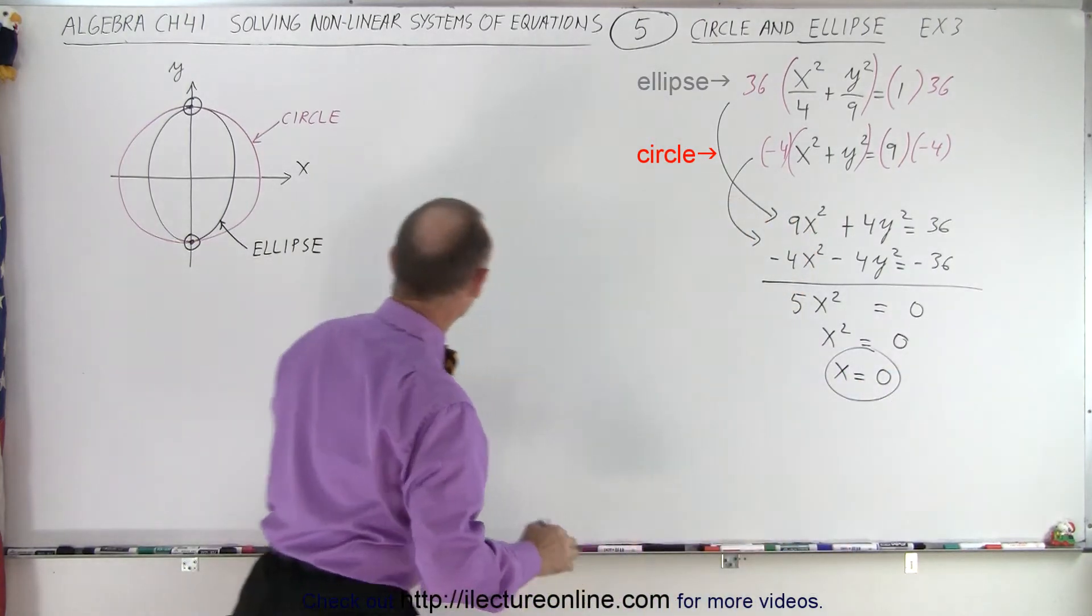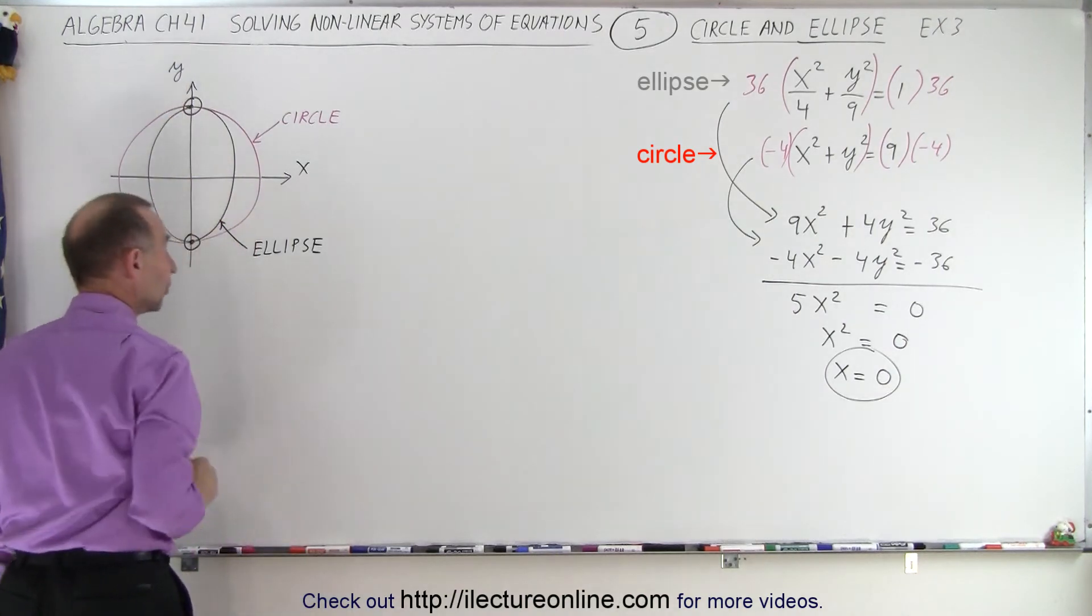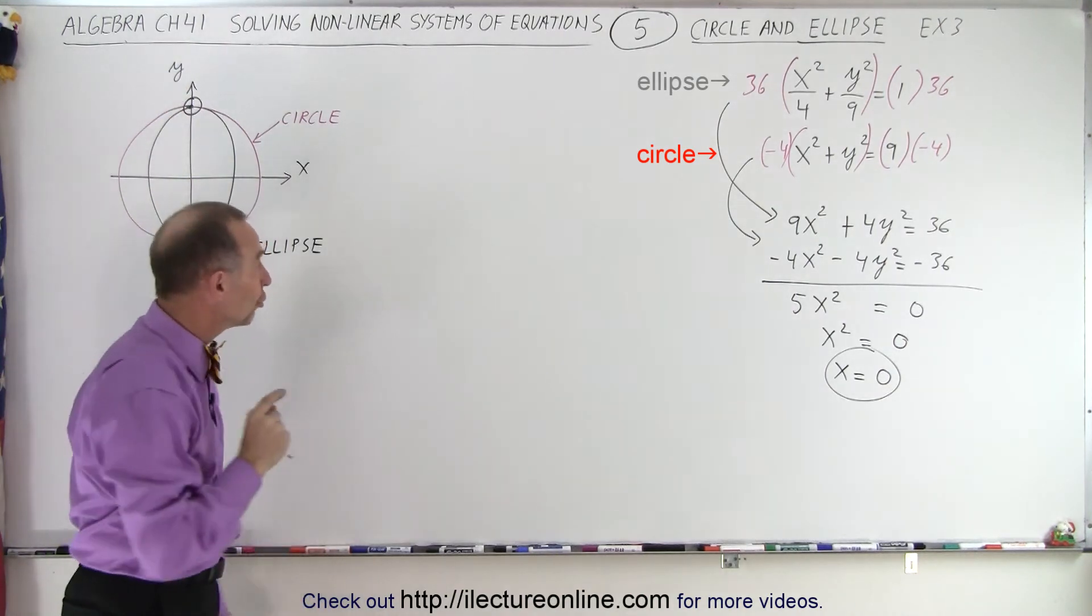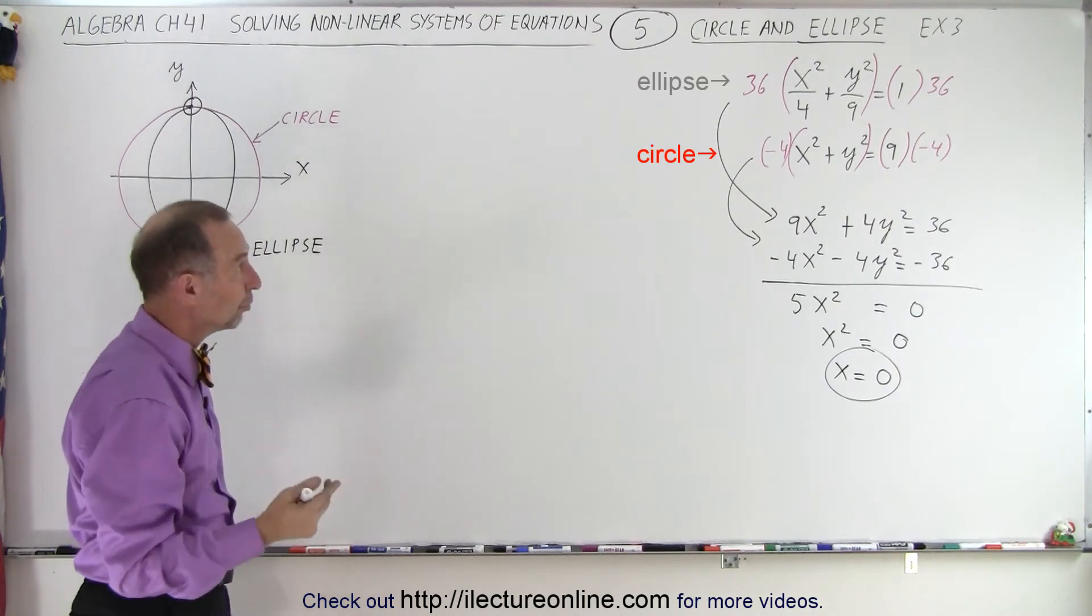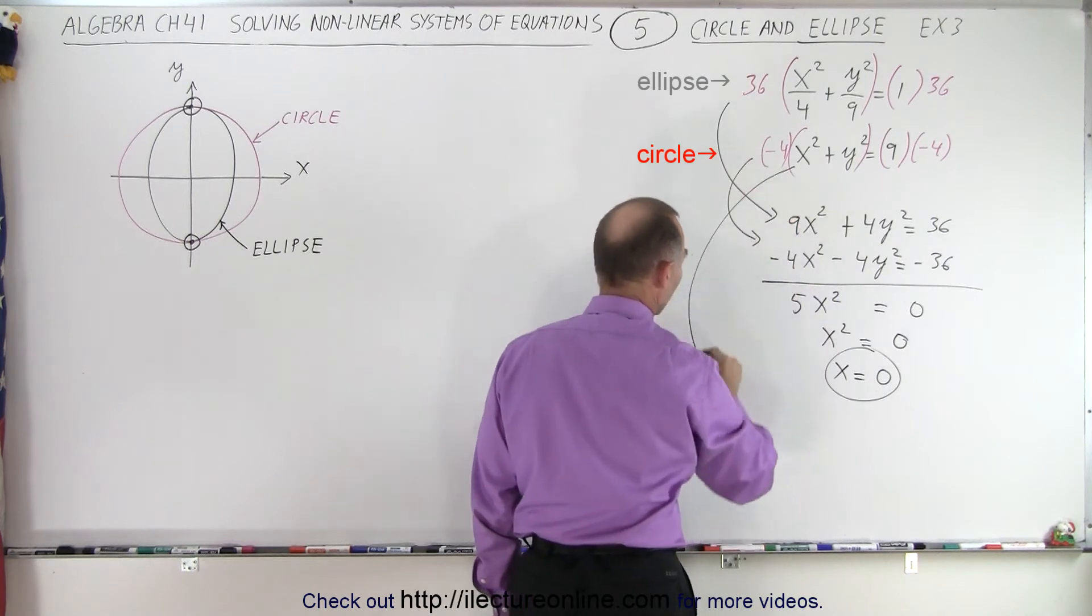x must be 0, and of course that makes sense when we look here. It looks like that's correct, x equals 0. Will we come up with the two possibilities for y? Well, we can do so by plugging that into one of our two equations. So let's use this equation.